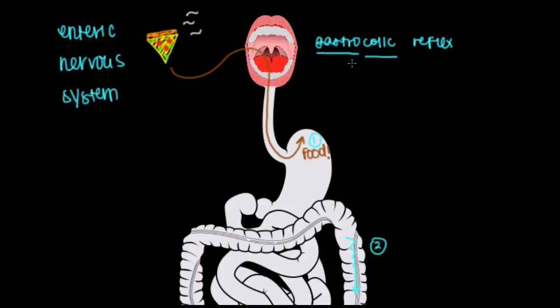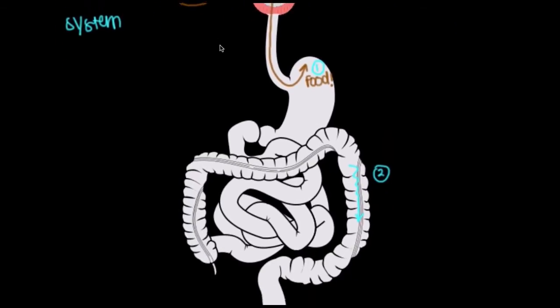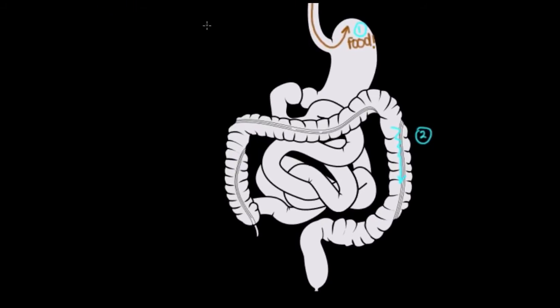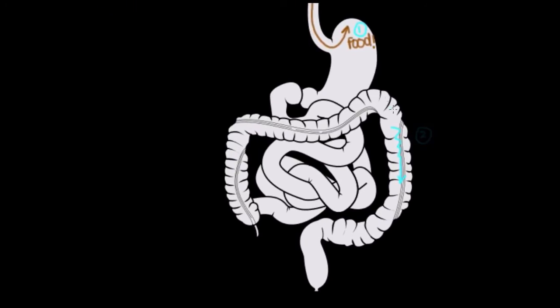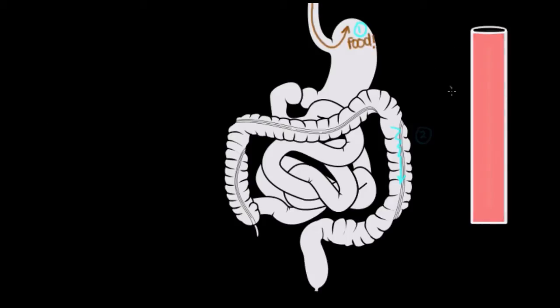So neuronal control is one mechanism our GI tract uses to control what we do when food is present. The other component we'll focus on down here is hormonal control. Now hormones, as you might recall, are substances that are released by tissues in our body that then go through blood vessels, like this guy right here, to go to some target organ or target tissue to cause an effect. So I'm going to talk about a couple of hormones here that regulate our GI tract when food is present.